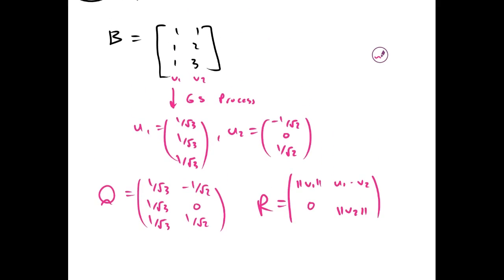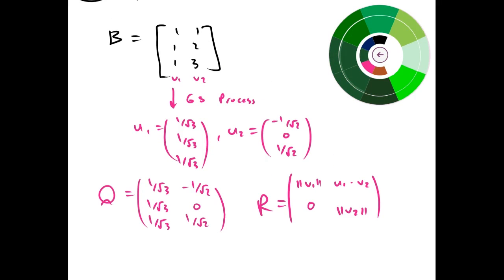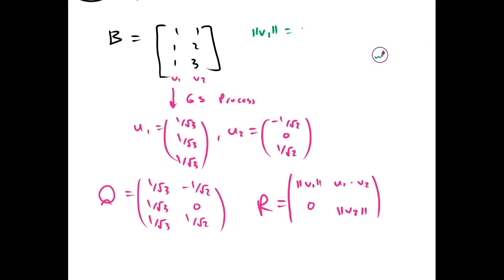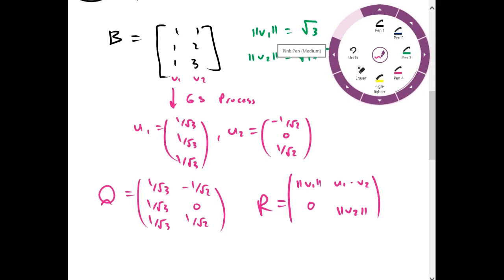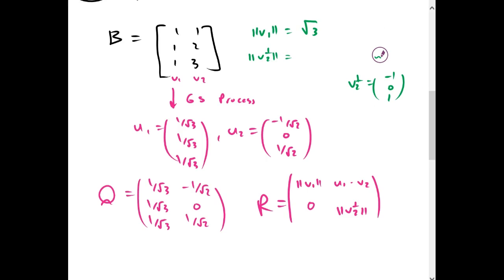The magnitude of V1 is the square root of 3, and the magnitude of V2, sorry, this should be the magnitude of V2 parallel. And to give you a reminder, V2 parallel was negative 1, 0, 1. So the magnitude of V2 parallel is going to be square root 2.